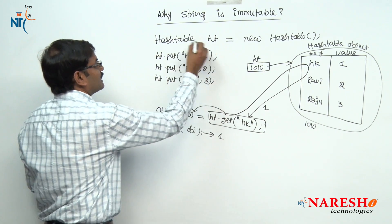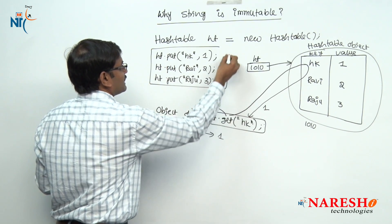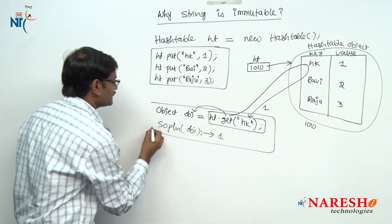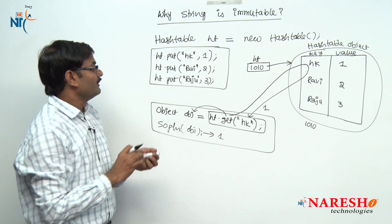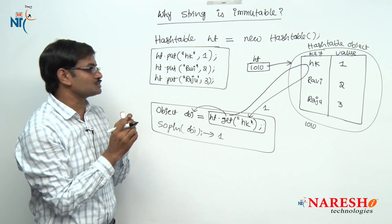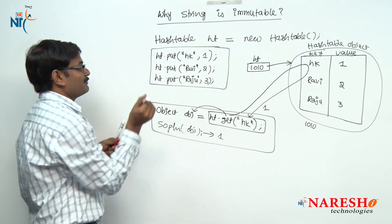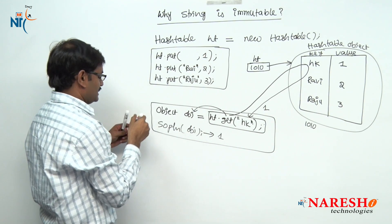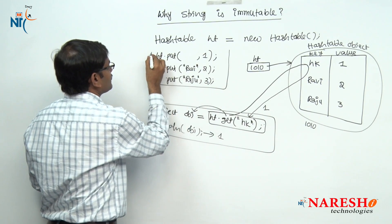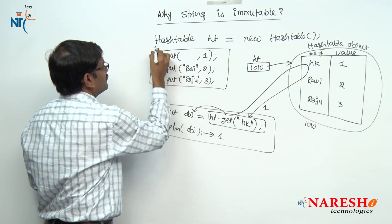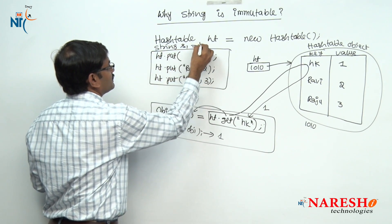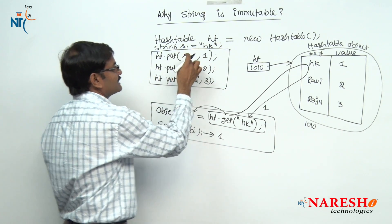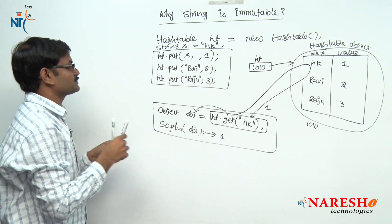Here is what I did: first I created a Hashtable object, second I stored entries, and then I am trying to retrieve. Here you have to understand one small point. After storing the objects, I am modifying this hk. How I am storing hk — not directly, but by first taking it into a local variable: String s1 = "hk". Then I am passing s1 here — storing s1 means the internal value hk is stored. Now the dangerous point is coming.